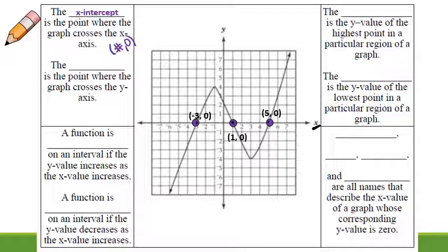This leads us to our next blank. The blank is the point where the graph crosses the y-axis. So of course it's going to be the opposite. We're going to have y-intercept. So in this case we want to look at the y-axis and see where it crosses. And on this particular graph we cross at zero comma two. So you'll notice the opposite happens. We have zero comma a number is always the case for the y-intercept.